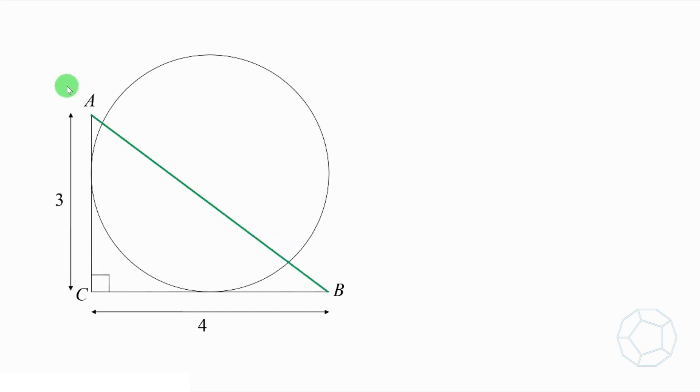First of all, we shall focus on the right-angled triangle ABC. The green side, which is the hypotenuse, can be found easily. Using Pythagoras theorem, AB squared is equal to 3 squared plus 4 squared. Solving the equation, the length of AB is 5.